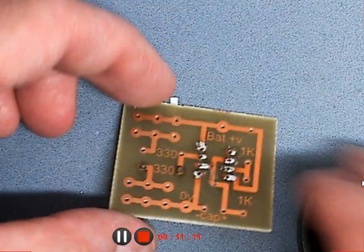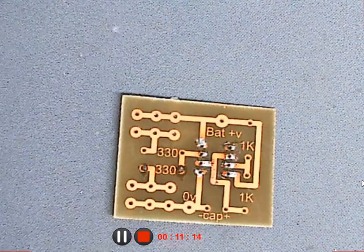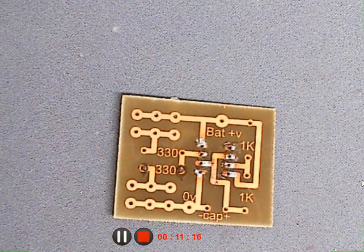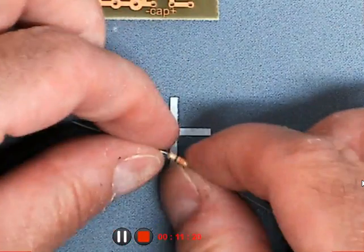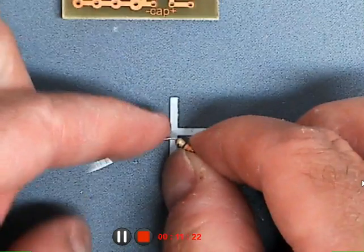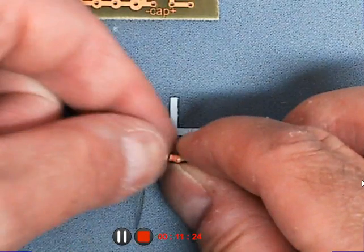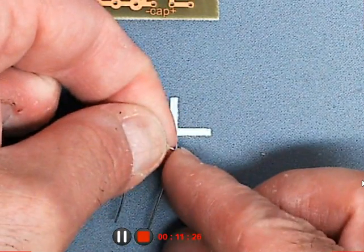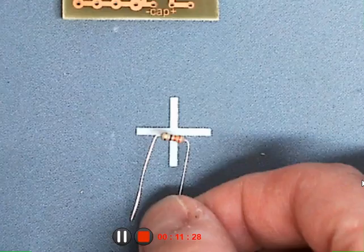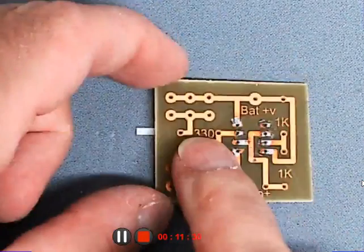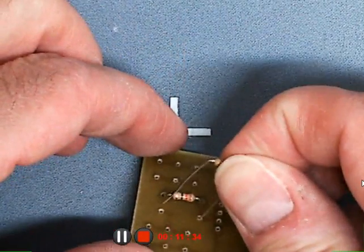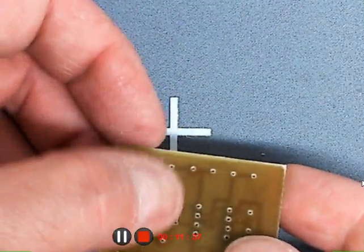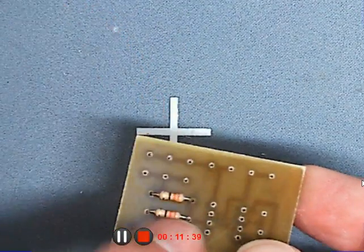And I will do that one more time. So I form the resistor into a staple shape, bend the legs down at 90 degrees naturally where they want to bend. Don't force it any closer. Locate the position, turn over and slide the legs through the holes.